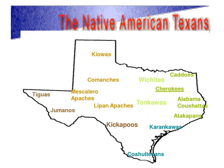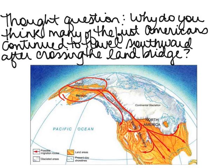Here you see a map of the different Native American tribes across Texas. We're not going to go over all of these, but we're going to go over most of them in this video. As a thought question: why do you think many of the first Americans continued to travel southward after crossing the land bridge? They start way out and move all the way down, some of them into Texas. Take a minute and think about that.